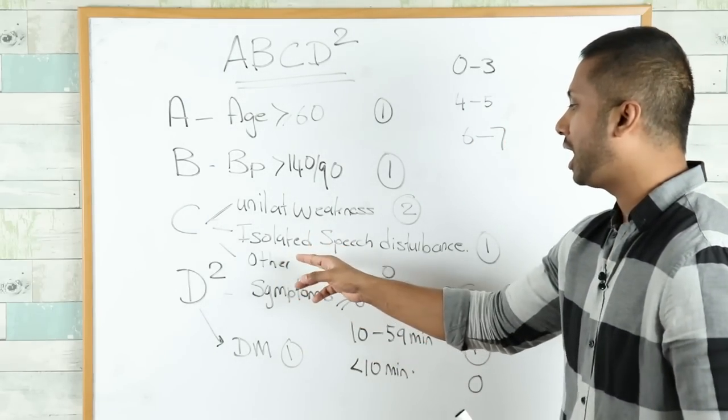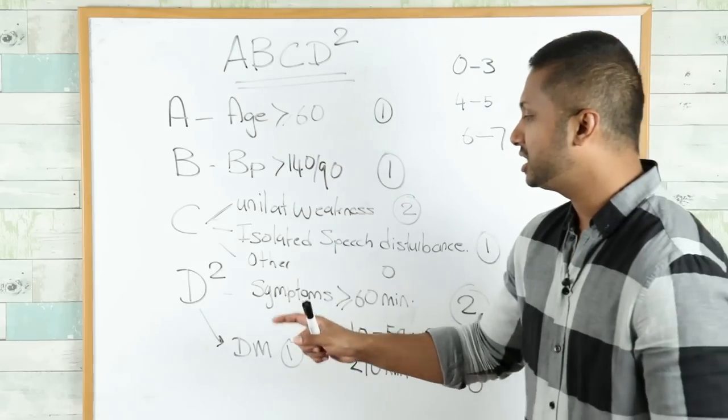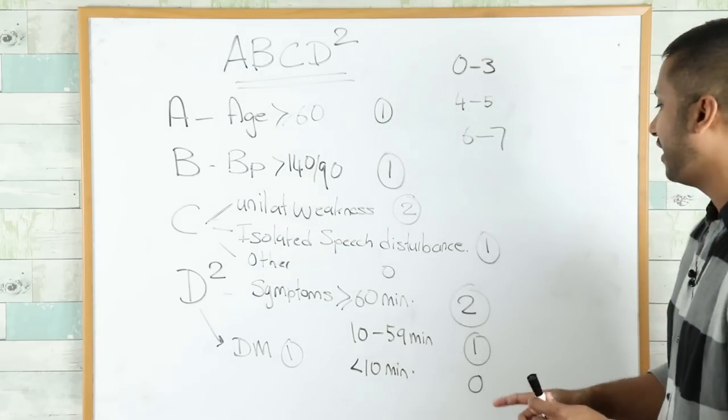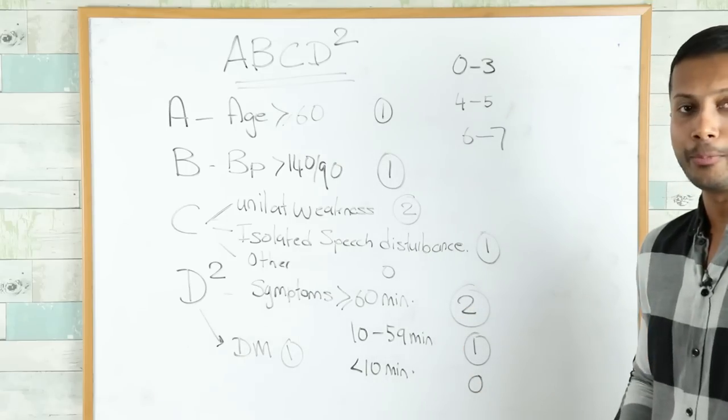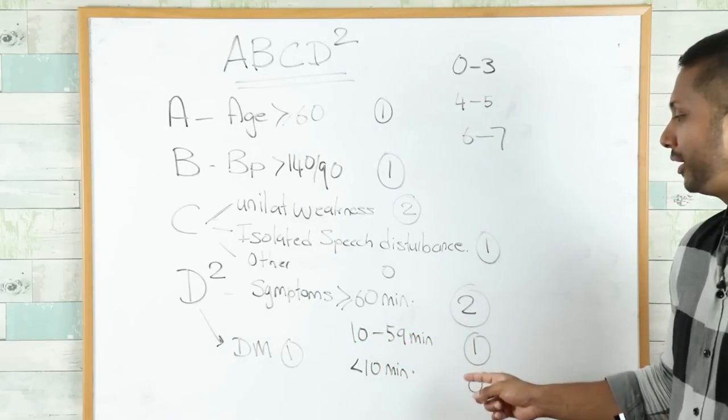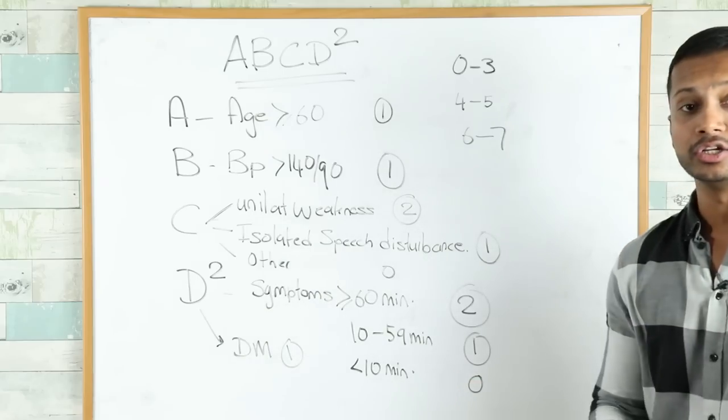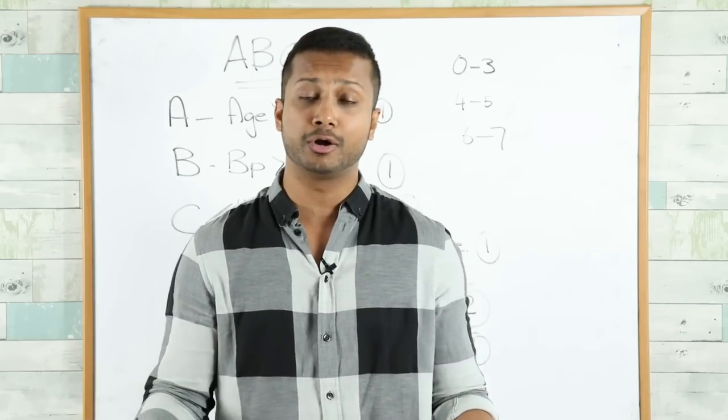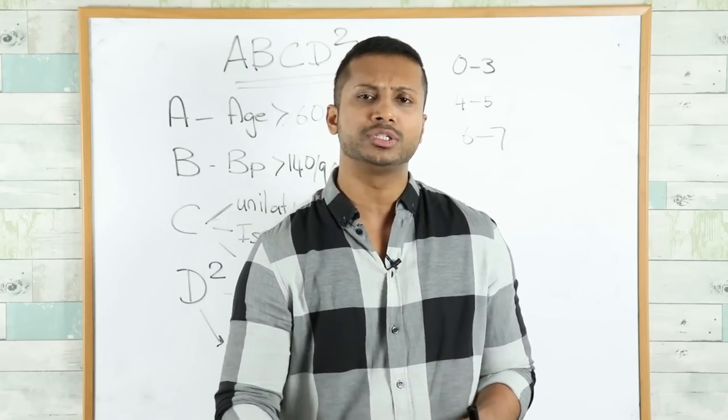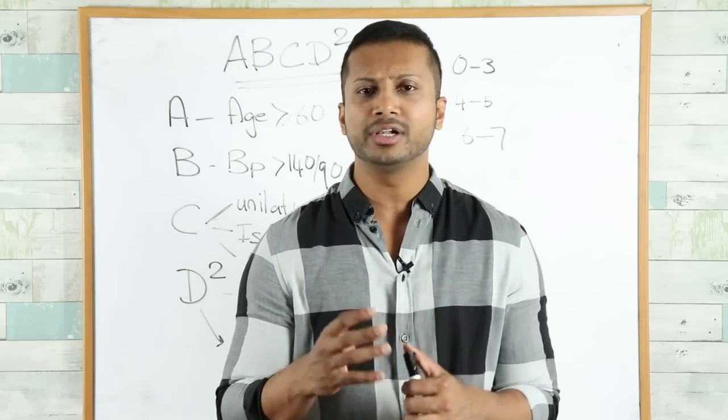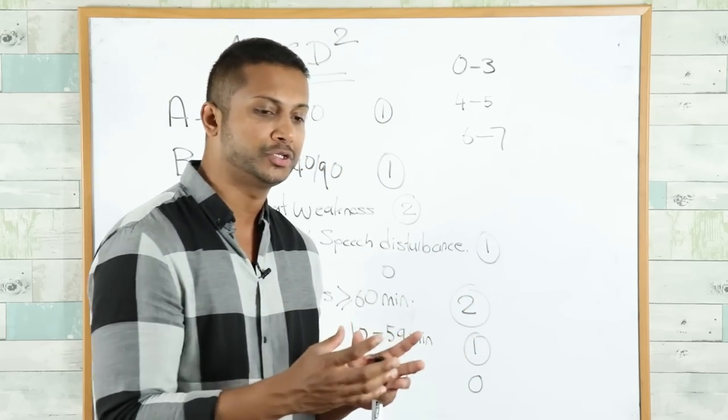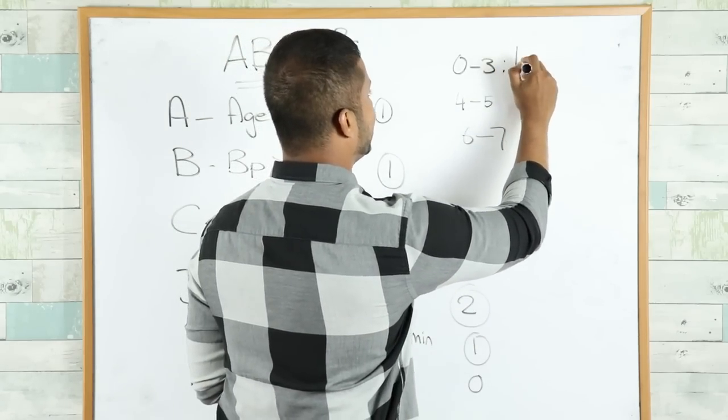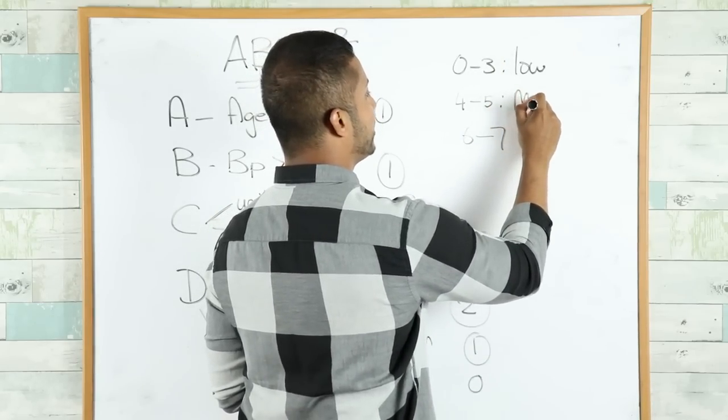D stands for two things: duration of symptoms and diabetes mellitus. Duration of symptoms: if the patient has symptoms more than 60 minutes, gets two points. If it is 10 to 59 minutes, one point. Less than 10 minutes gets zero points. Diabetes: if the patient has diabetes, gets one point; if no diabetes, zero points. ABCD² score tells you what is the risk that this patient is at of developing an actual stroke within the next one week. Score of 0 to 3 is low risk, 4 to 5 is moderate risk, whereas 6 to 7 is high risk.